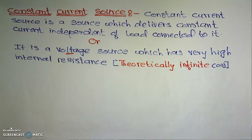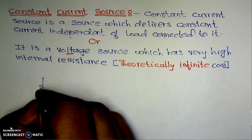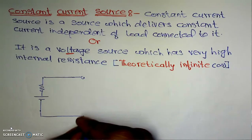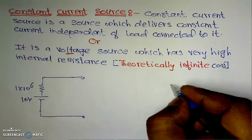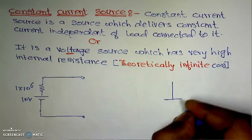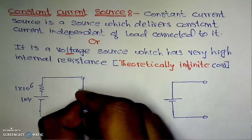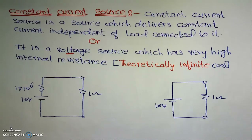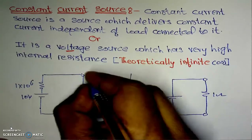To understand the constant current source concept, I will again consider two cases. In one case, the source has very high internal resistance of 1 megaohm (1×10⁶ ohm) with a 10-volt source. In the other case, the source has zero internal resistance. The load resistance starts at 1 ohm for both cases, and we are interested in the terminal current IAB.